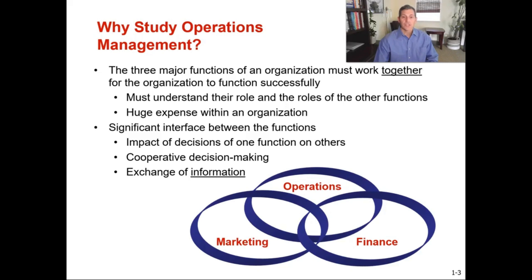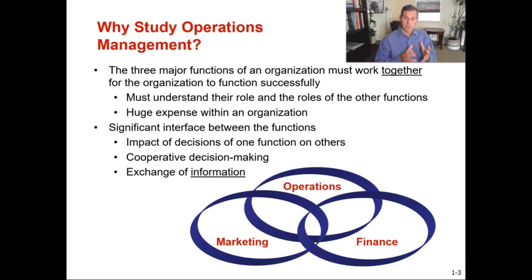Marketing generates demand and finds customers — they understand what value the customer wants, and nothing happens until we have those sales. In production and operations, we take what is sold and create that product or service and deliver it to customers. The operations team and the marketing team have to be aligned in designing products and services that meet customer expectations. It does no good if marketing designs something and operations builds something that doesn't meet those expectations.